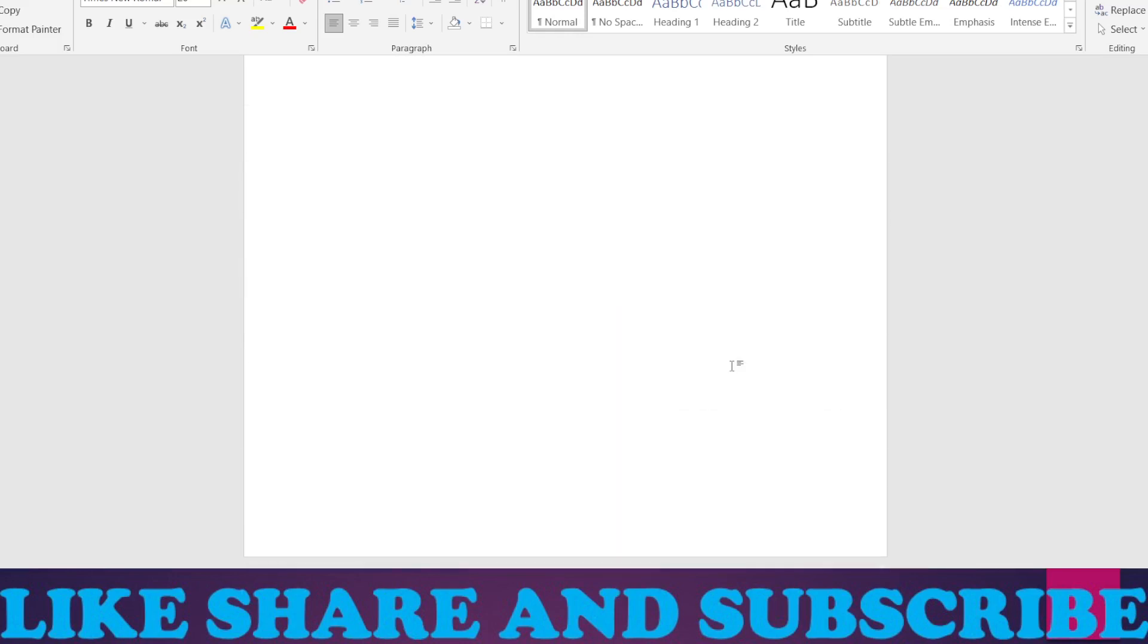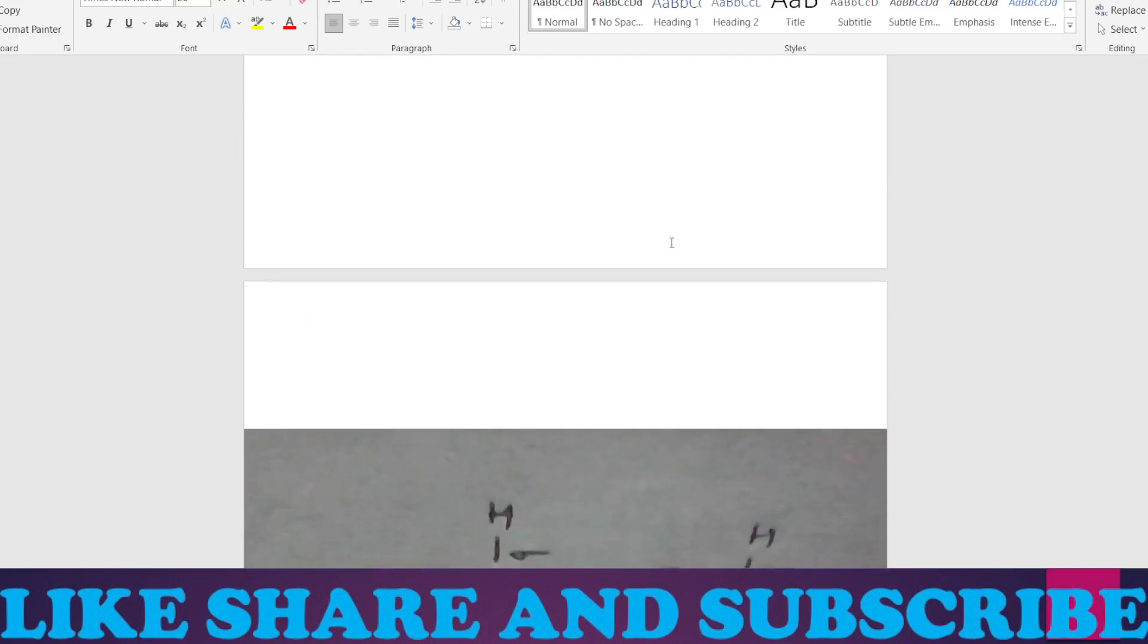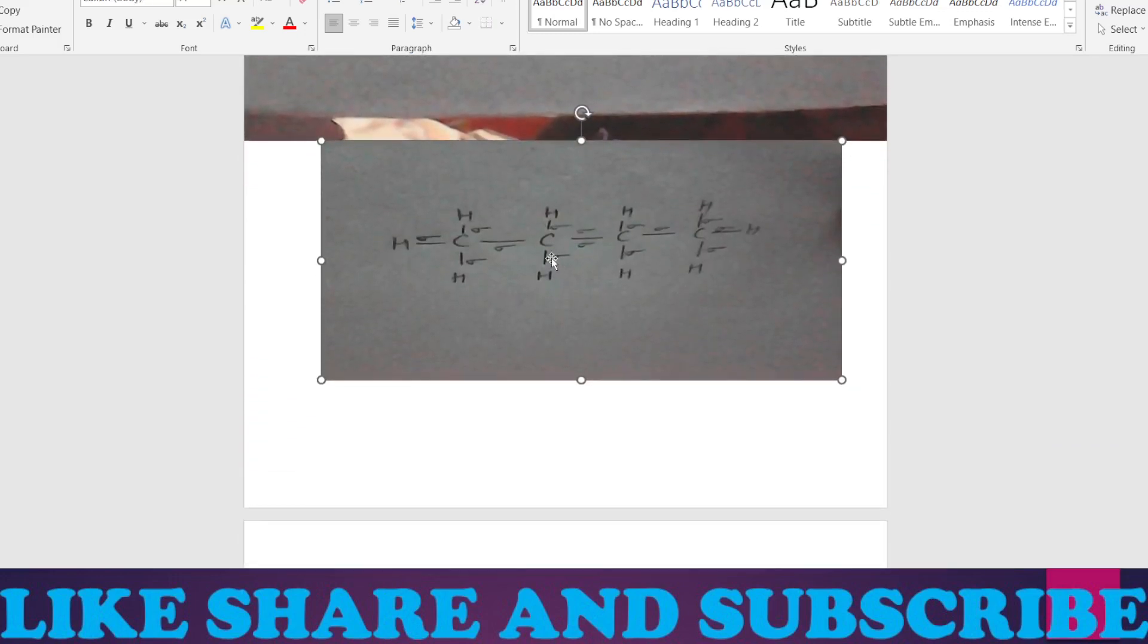Likewise the second example, this one. If you expand the structure, you will find something looks like this. From here you can see that there all are single bonds, so all are sigma bonds. You can easily count the number of sigma bonds: one, two, three, four, five, six, seven, eight...